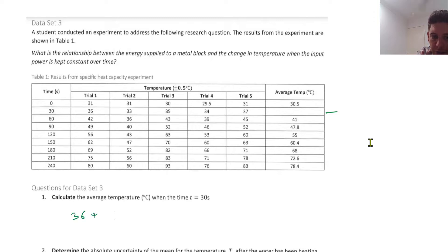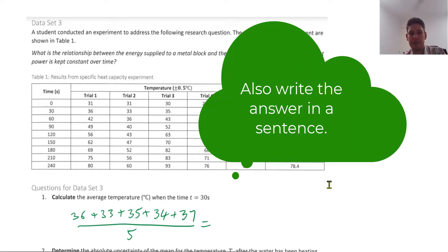So 36 plus 33, 35 plus 34, plus 37 divided by, there's 5 trials. Put it into your calculator.